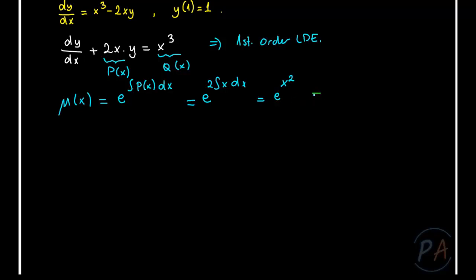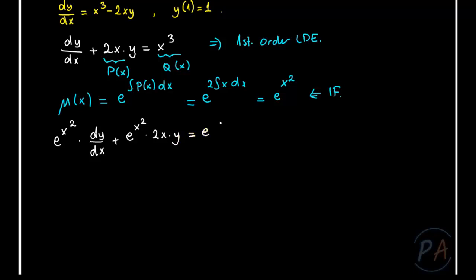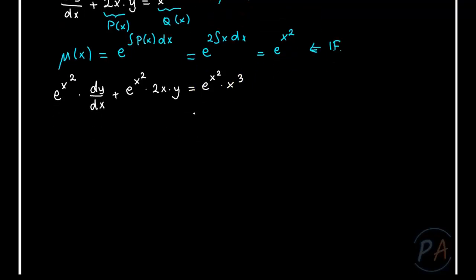This is the integration factor. When we multiply the first-order linear differential equation by this integration factor, the left-hand side will be rearranged into a simply integrable form. So: exponential x squared times dy/dx plus exponential x squared times 2x times y equals exponential x squared times x cubed.